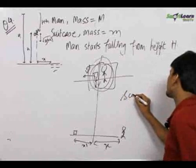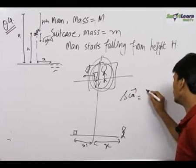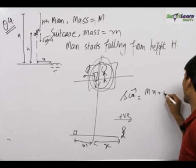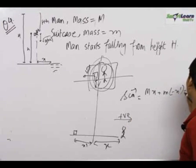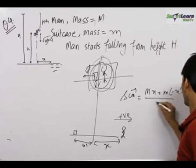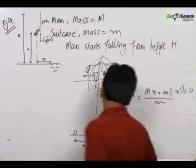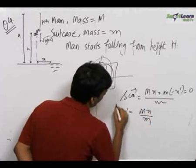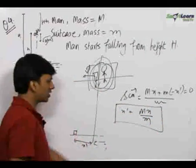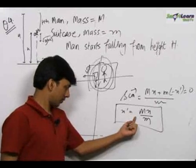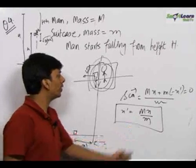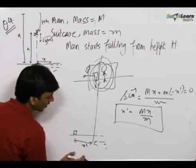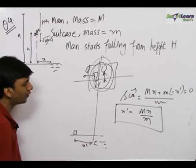We write the displacement of centre of mass equation: M times x (taking the rightward direction as positive) plus m times (minus x') equals 0. So we get x' = Mx/m. Therefore the bag lands at a distance Mx/m from the line of fall, on the opposite side from the pond.